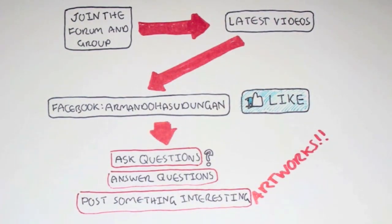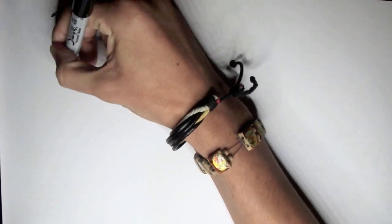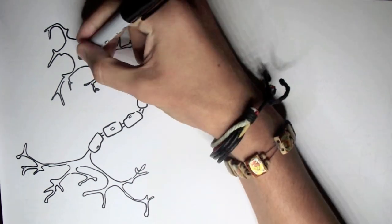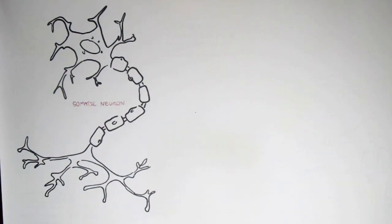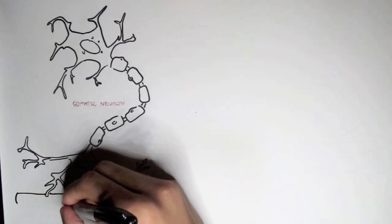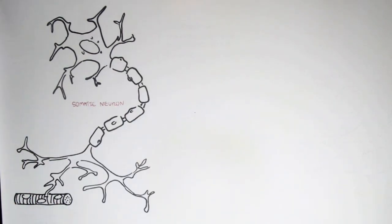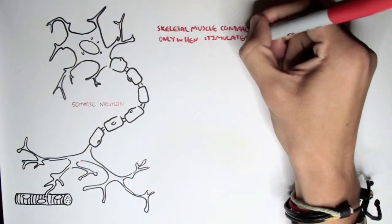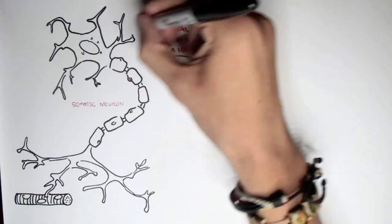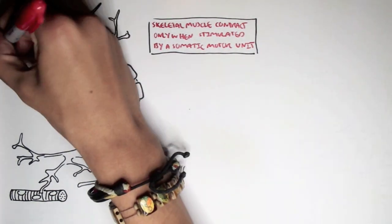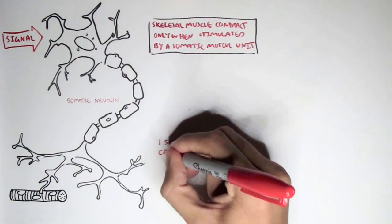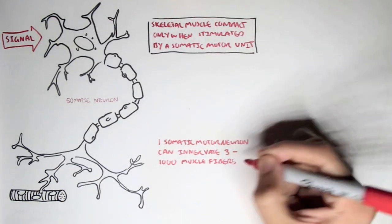In this video we're going to talk about skeletal muscle contraction. We begin with a neuron — a nerve cell — specifically what's called a somatic neuron. Here we have a muscle fiber from a muscle. A skeletal muscle will contract only when stimulated by a somatic motor neuron. A signal arriving at the neuron can cause the muscle fiber to contract. A somatic motor neuron can innervate between 3 to up to 1,000 muscle fibers.